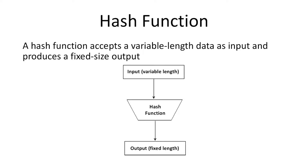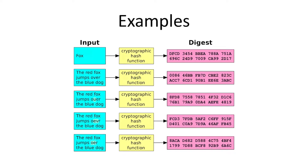A cryptographic hash function accepts variable length data as input and produces a fixed length output. This input could be a message or a file such as an image file, a word document, or even a video. This output is commonly referred to as a message digest, hash value, checksum, or fingerprint. For example, this figure shows several input messages that vary in size and their corresponding fixed-size outputs or message digests calculated using the SHA-1 hash function.